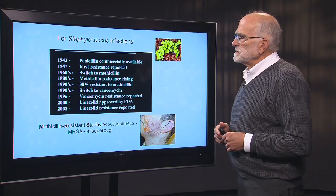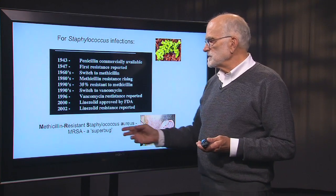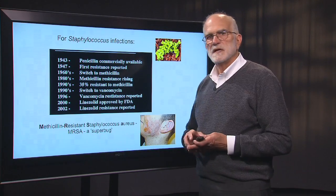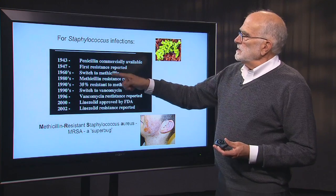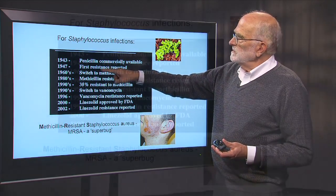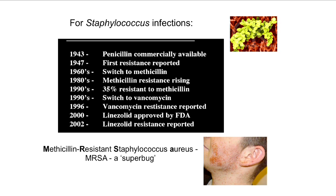A good example is Staphylococcus. We call methicillin-resistant staph MRSA — you can also think of it as multiply-resistant staph. Staphylococcus evolved resistance to penicillin four years after it became commercially available. It evolved resistance to methicillin after methicillin was used, which took a couple of decades. There was then a switch to vancomycin, and within about five or six years resistance evolved to vancomycin. Linezolids were introduced, and two years later resistance to linezolids was reported. So this is now becoming a very threatening kind of bacterium.